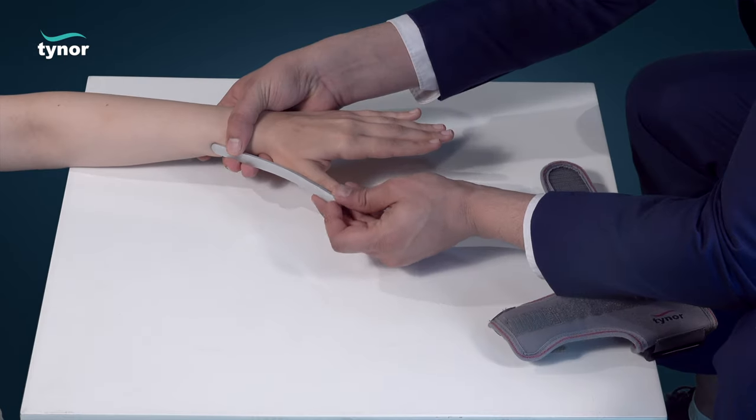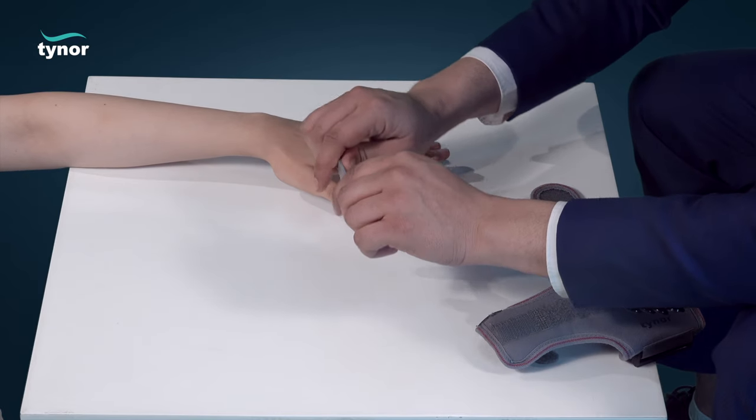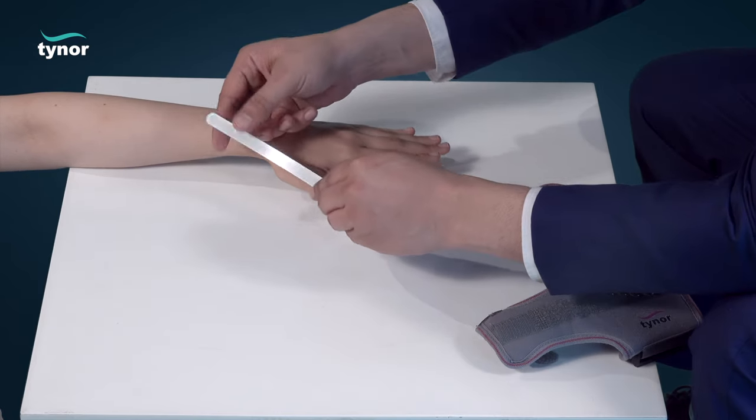Now match the contours of the splint to the contours of the thumb according to the required thumb abduction.